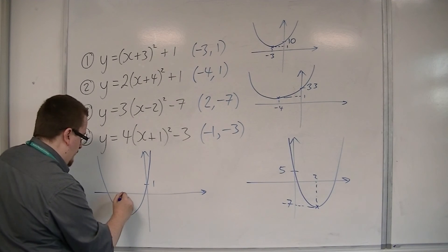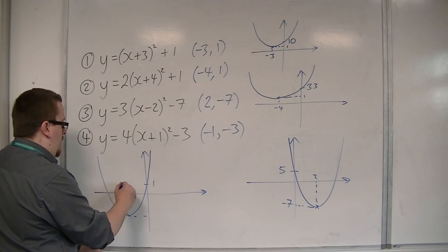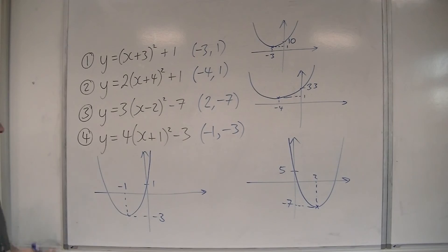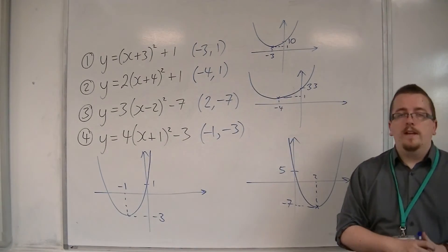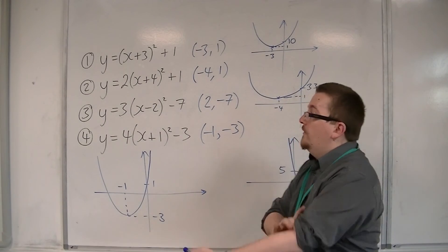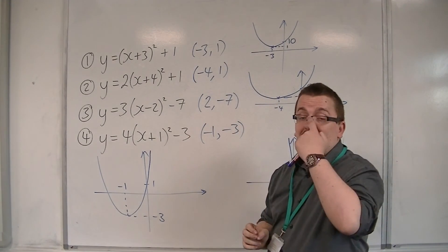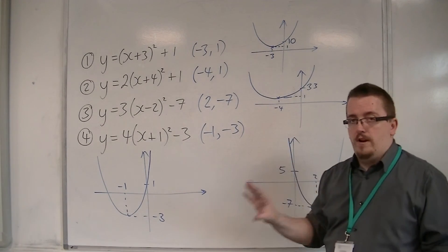So that was at minus 1 and that's minus 3. And that would be a sketch for the fourth one. So when you're sketching these, identify first where the vertex must be and then where it crosses the y-axis. And that will enable you to get the sketch right.